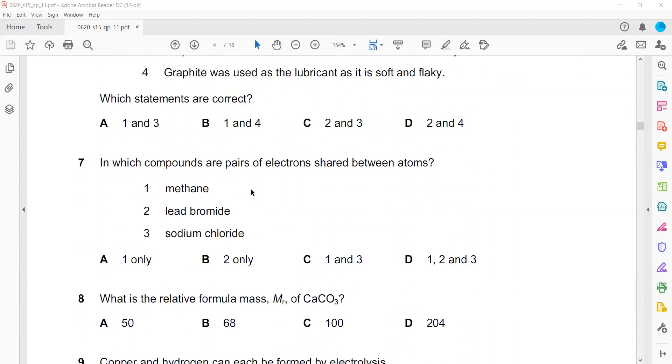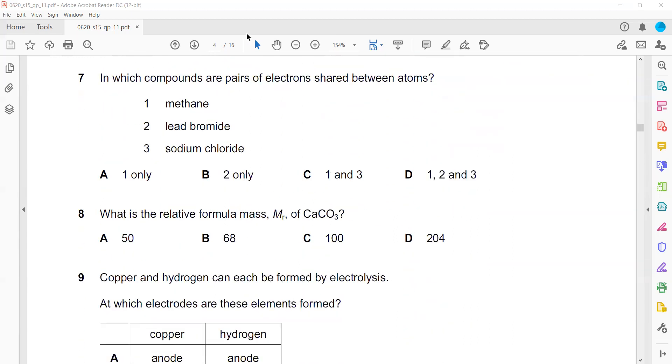In which compound are pairs of electrons shared? Shared means covalent, and covalent is always between non-metals. When non-metal combines with another non-metal, they will result in covalent bonding. Methane means CH4. Carbon and hydrogen both are non-metals, so they will have a covalent bond. Lead bromide and sodium chloride are ionic. Only methane is the right answer.